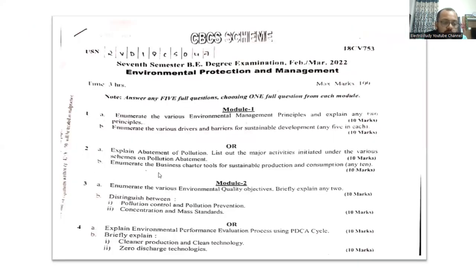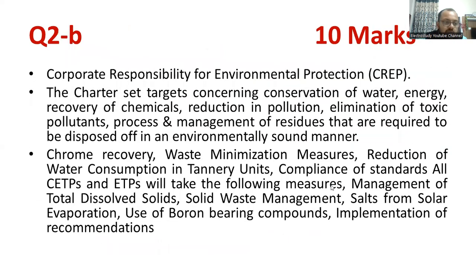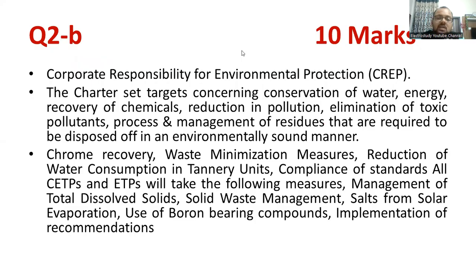Question 2b: enumerate the business character tools for sustainable production and consumption — it carries 10 marks. Nowadays you can see there are a lot of policies from the government side. Every corporate has to contribute something for the environment. Every organization has an environmental engineering department — corporate responsibility for environmental protection, the CREP department, which is mandatory for every organization nowadays. You can see different examples also.